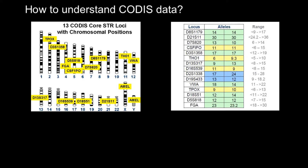Today I'm only going to briefly explain the principles and then talk more about analyzing data. As you can see, there are 13 CODIS core STR loci. And if we count those loci, we would find some peculiarities.